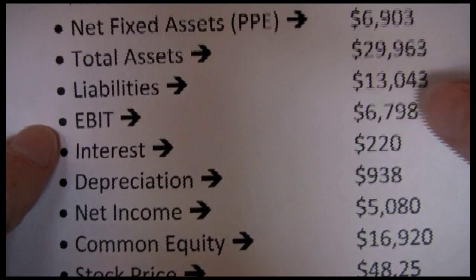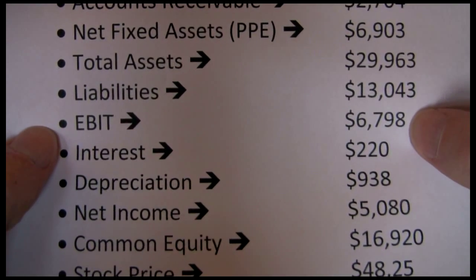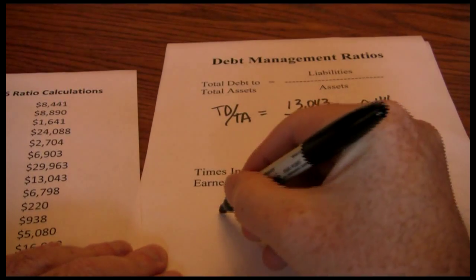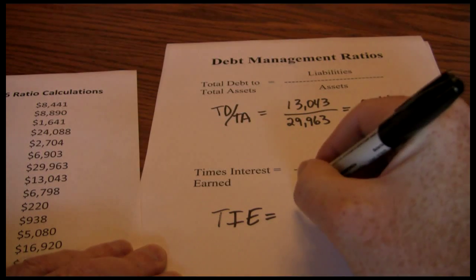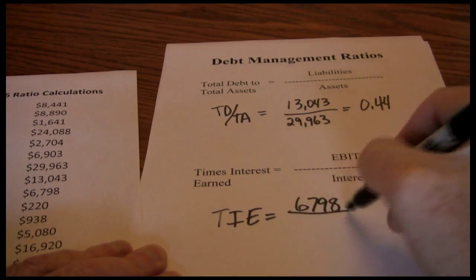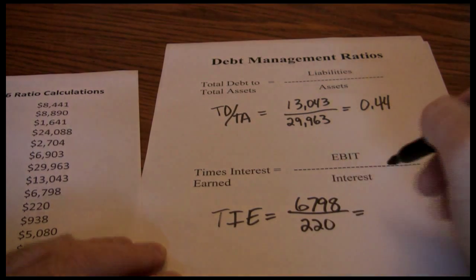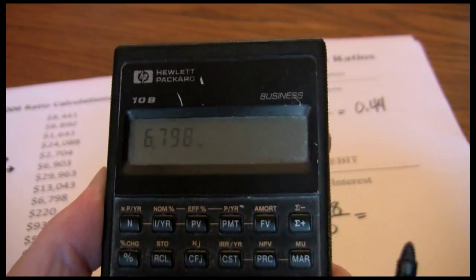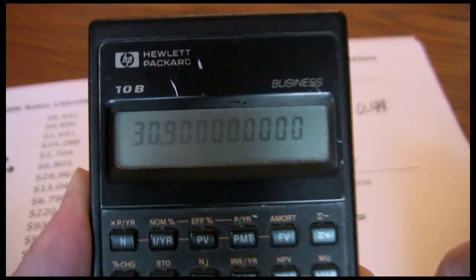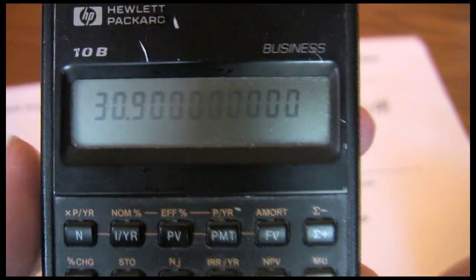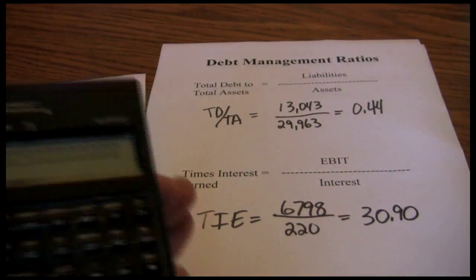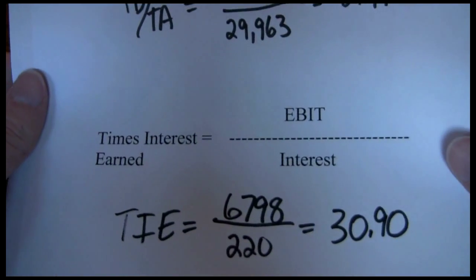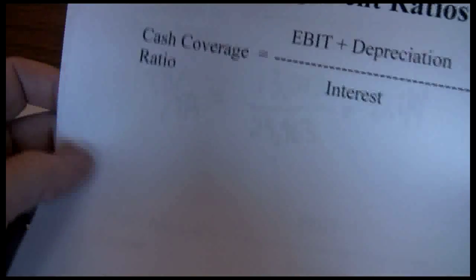For Coca-Cola, the earnings before interest and taxes were $6,798 in 2006, and their interest expense during that same year was $220. So the times interest earned is $6,798 in EBIT divided by $220 in interest expense, and we get a times interest earned of $30.90. This tells us that Coca-Cola is very comfortable making their interest payments and there's no concern about their ability to meet their ongoing interest obligations.